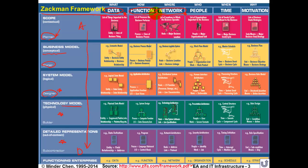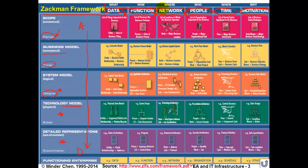Zachman over time extended three more columns to this enterprise architecture. He included people, time, and control. People here may involve people, organizational structure, motivation, and performance measures. One easy way to remember these six columns is the five W's and one H approach. People is 'who,' time is 'when,' controlling is when to do what — how to do things.